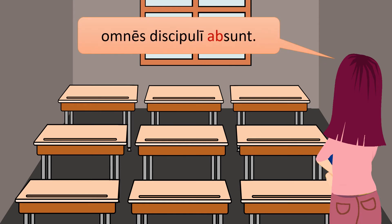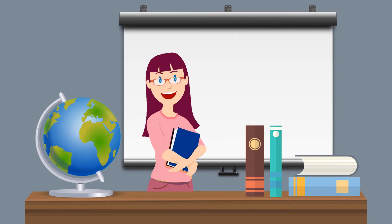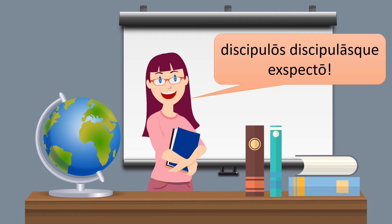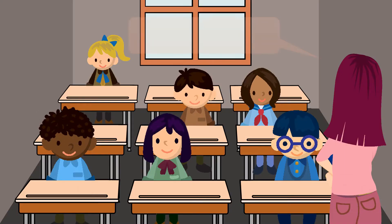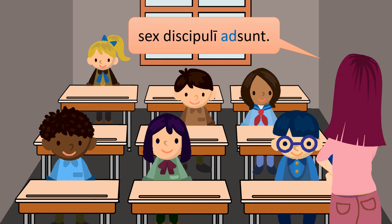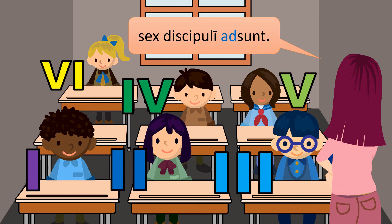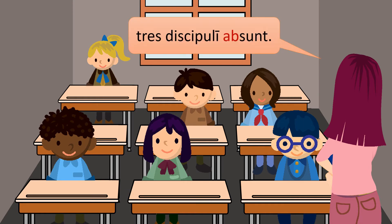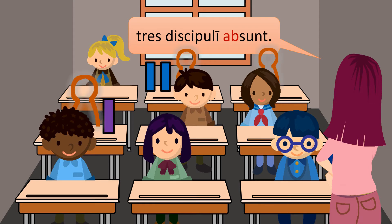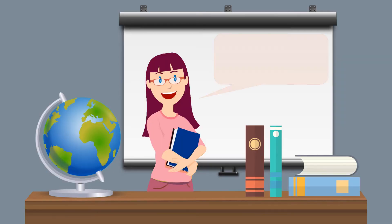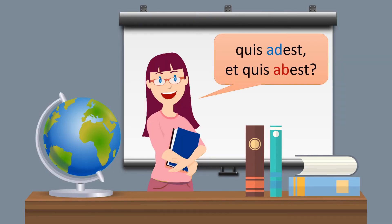Omnes discipuli ab sunt. Discipulos discipulasque expecto. Sex discipuli ad sunt: unus, duo, tres, quattuor, quinque, sex discipuli ad sunt. Tres discipuli ab sunt: unus, duo, tres discipuli ab sunt. Quis ad est, et quis ab est?